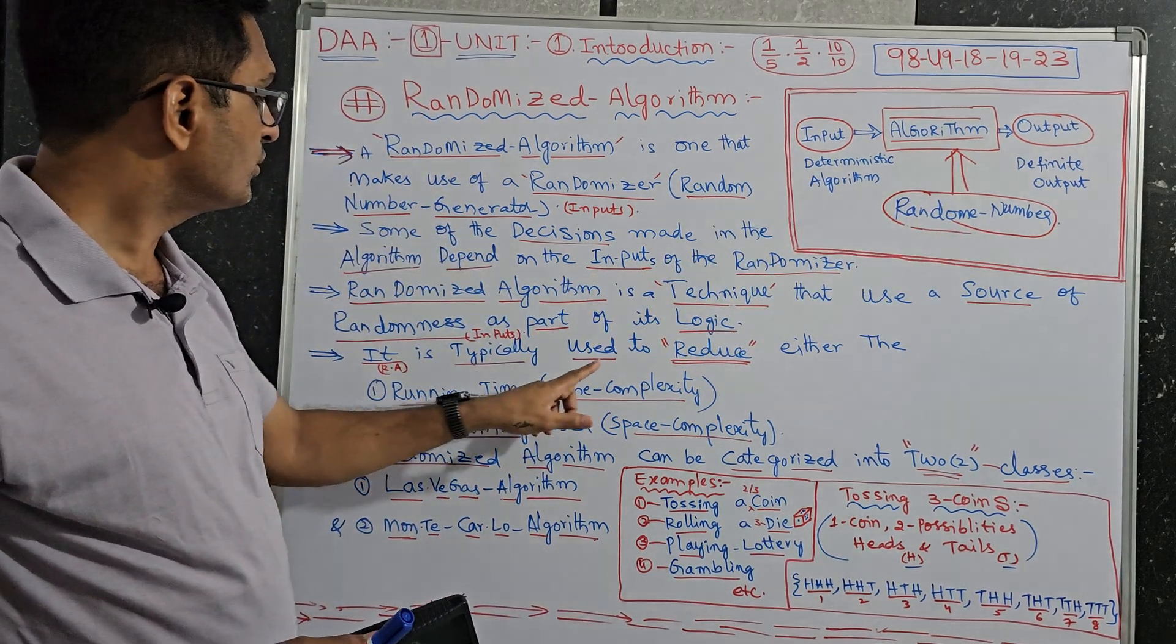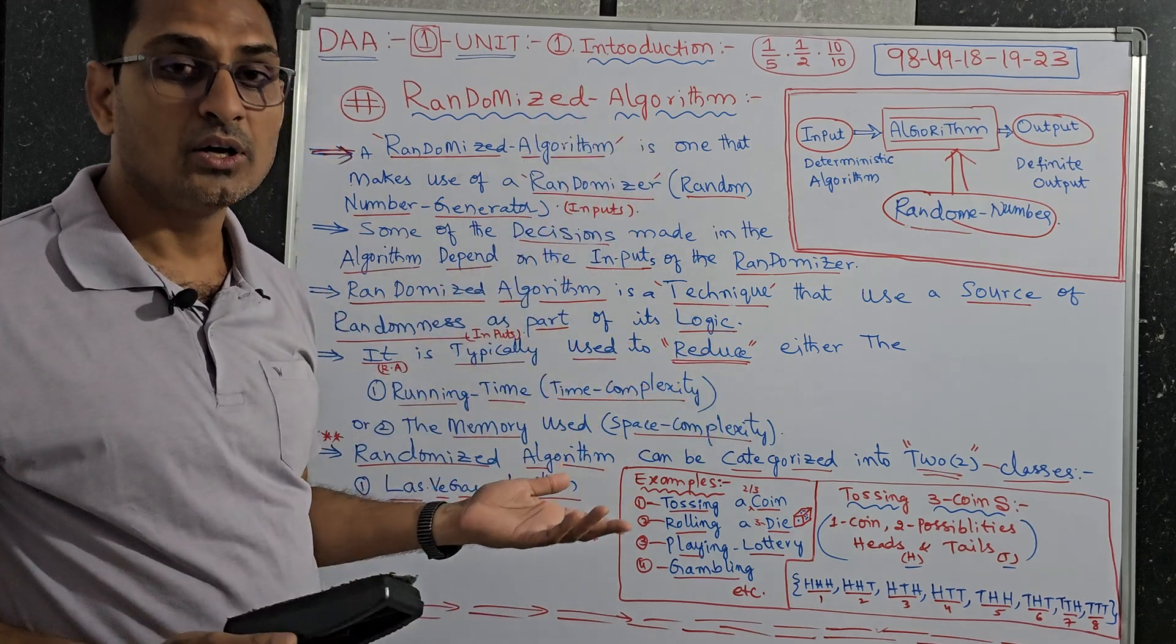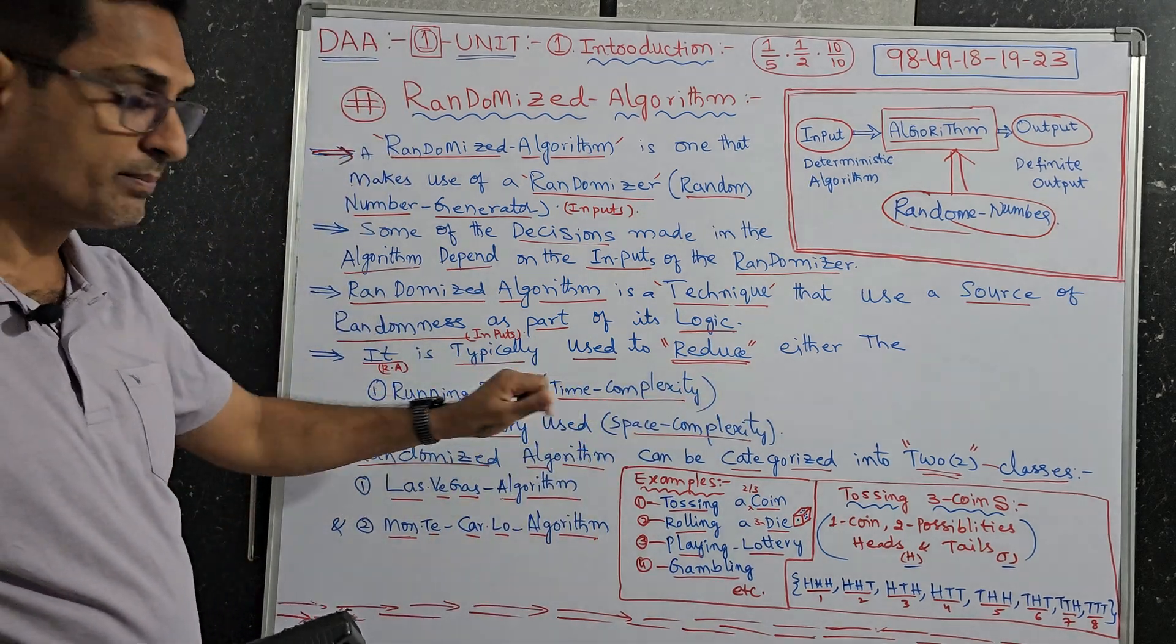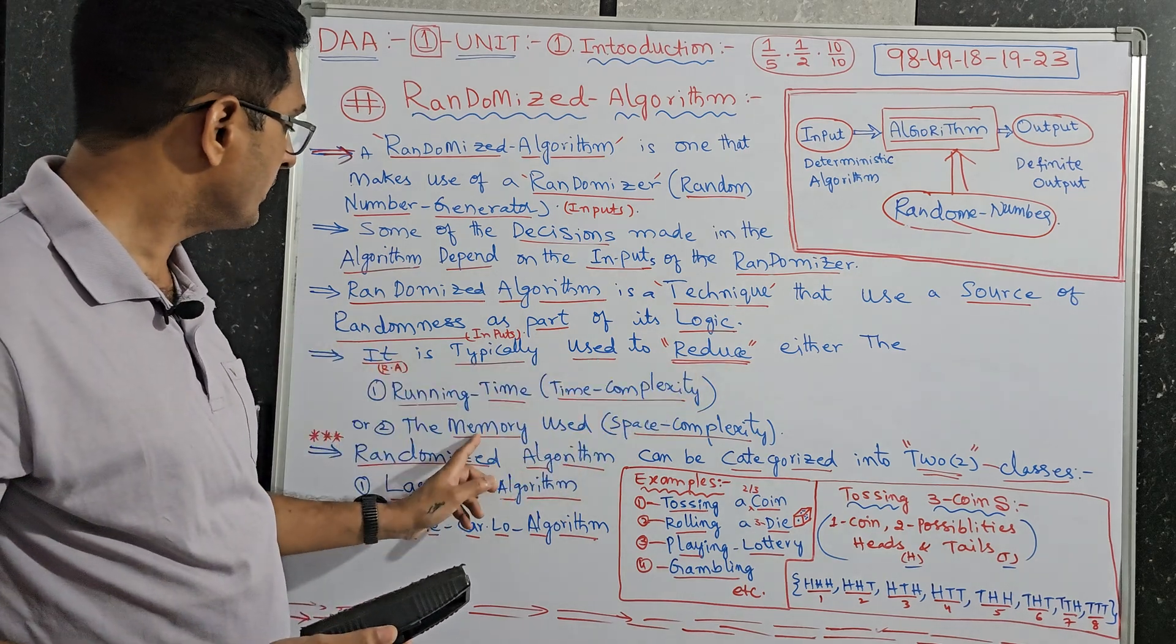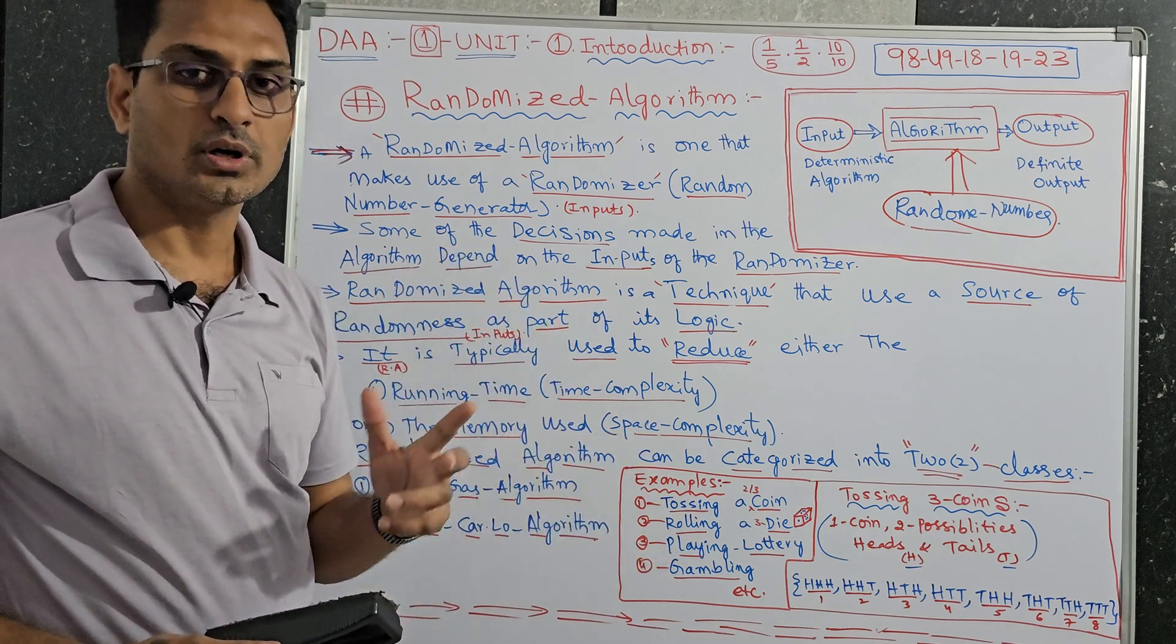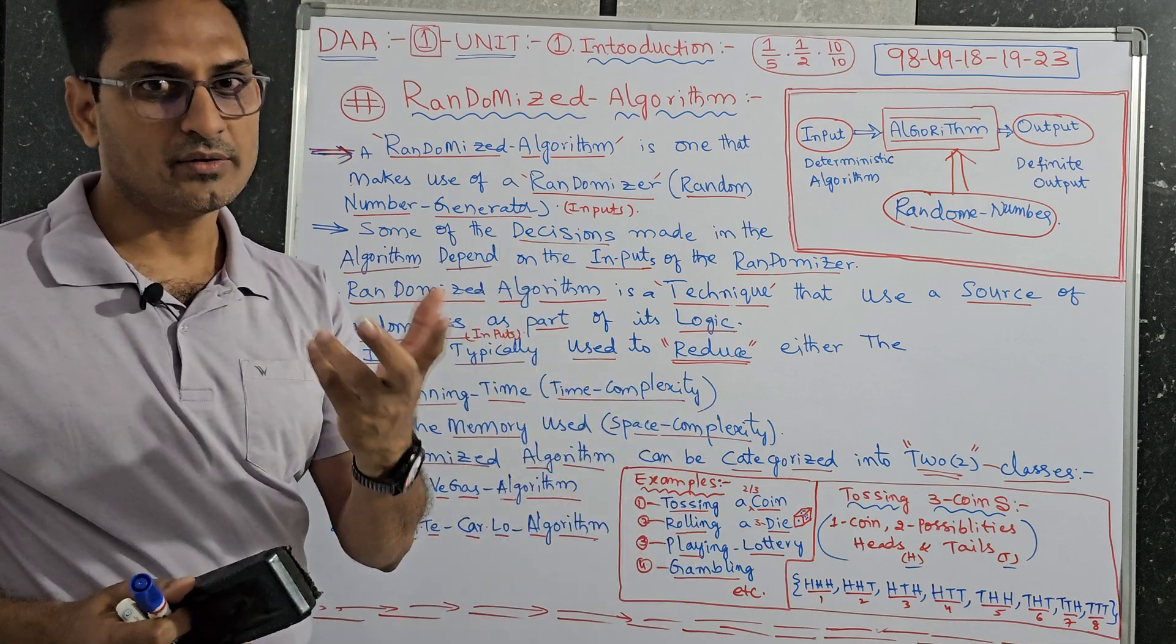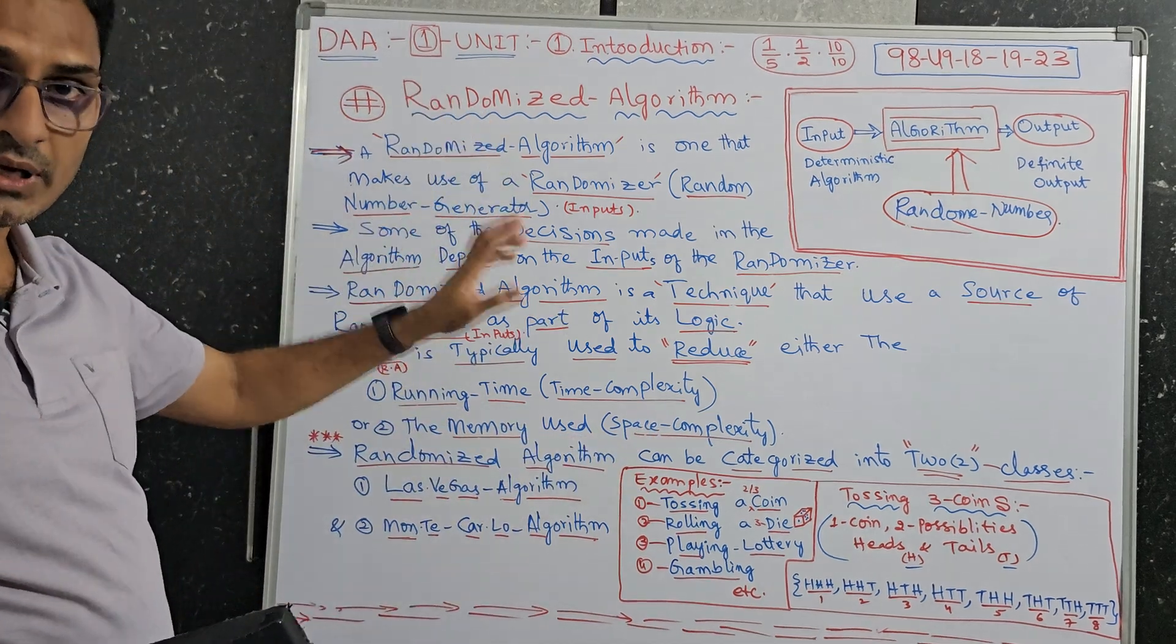Then it is typically used to reduce, here the key point, reduce. This algorithm's advantages. Sometimes you will be asked, what are the advantages of randomizer algorithms. It will reduce either the running time, nothing but time complexity, or the memory used, nothing but space complexity. The space occupied by algorithm or the program in the hard disk is called space complexity. It should occupy less space.